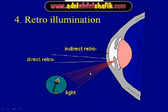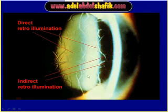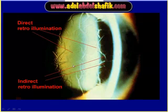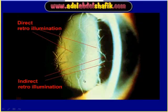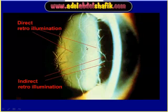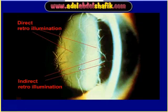If you put the light to the iris and start to examine the cornea, again this is a retro illumination. You can see here a section in the cornea — we are not examining that section but examining this part of the cornea. You can see some lines criss-crossing each other. These lesions in the cornea seen against the illumination coming from behind are called direct retro illumination.